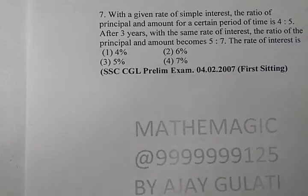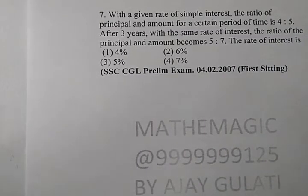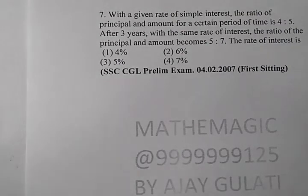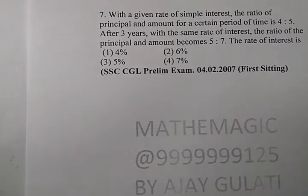With a given rate of simple interest, the ratio of principal and amount for a certain period of time is 4:5. After 3 years, with the same rate of interest, the ratio of the principal and amount becomes 5:7. The rate of interest is...